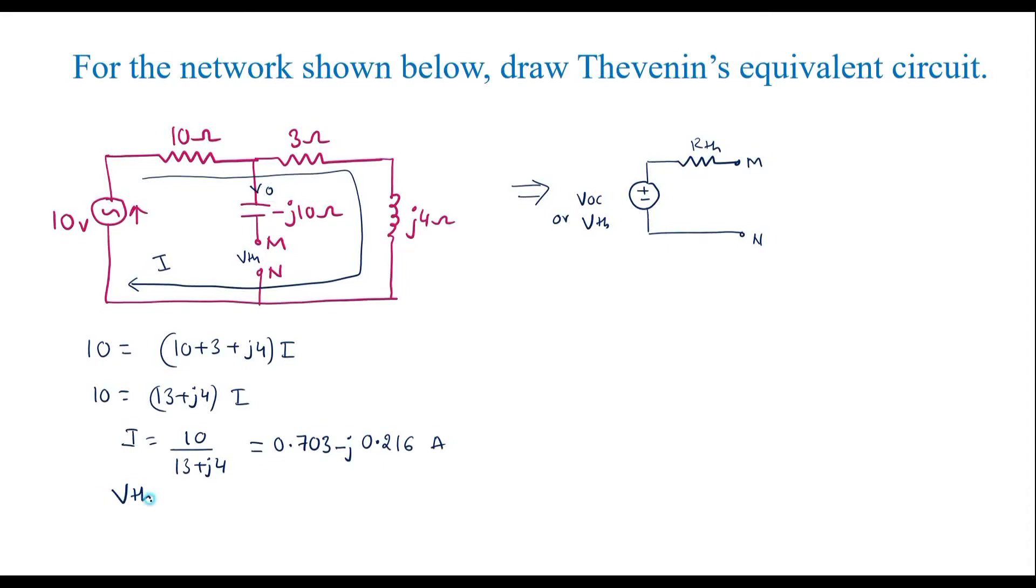Therefore, VTH is equal to 3 plus J4, that is 3 plus J4 into I, which is 0.703 minus J0.216. Solving this,